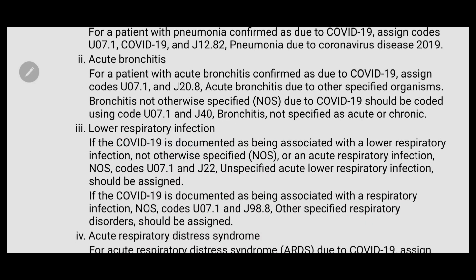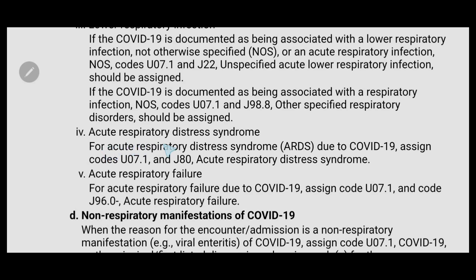For lower respiratory infection associated with COVID-19 (not otherwise specified or acute respiratory infection NOS), use U07.1 and J22 (unspecified acute lower respiratory infection). For acute respiratory distress syndrome (ARDS) due to COVID-19, assign U07.1 as the first code and J80 (acute respiratory distress syndrome) as the second code. For acute respiratory failure due to COVID-19, assign U07.1 as the principal diagnosis and J96.0 (acute respiratory failure) as the second code. Remember, U07.1 will always be the primary code for any COVID-related illness.